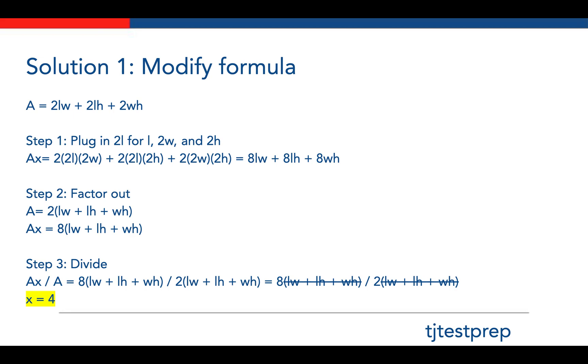The original area is 2LW plus 2LH plus 2WH. The first thing you'll have to do is plug in 2L for L, 2W for W, and 2H for H. Because each dimension of the solid is doubled, you'll have to plug in double the amount for each variable.